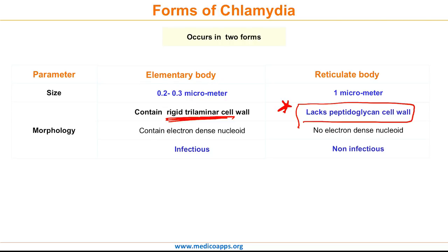By far the most important difference is that the elementary body is infectious, whereas the reticulate body is non-infectious. Looking at the ratio of RNA to DNA: since the reticulate body is actively dividing by binary fission, the amount of RNA will be more. In the elementary body, the ratio of RNA to DNA is 1:1, whereas in the reticulate body it is 3:1.